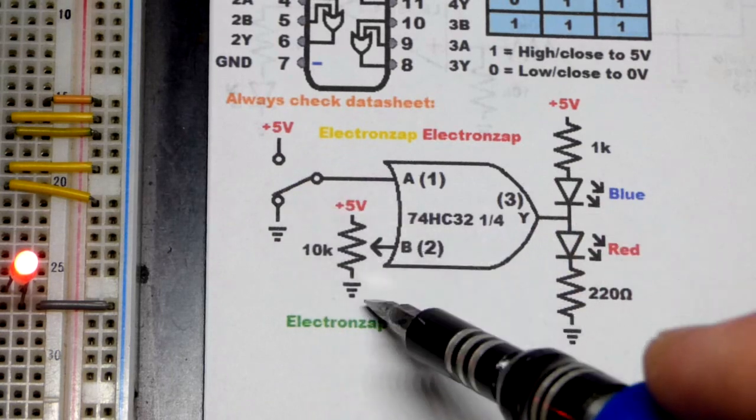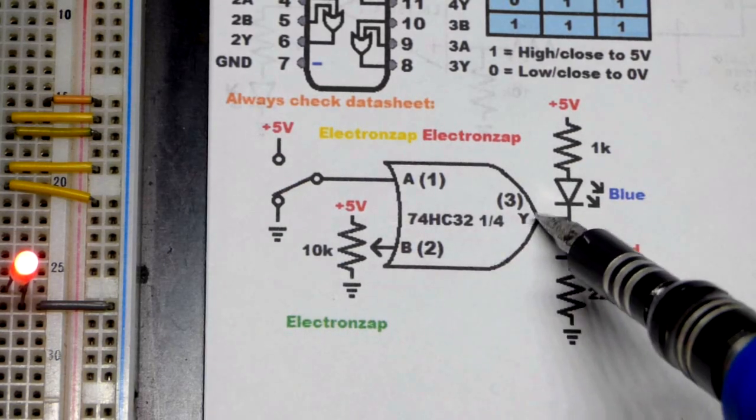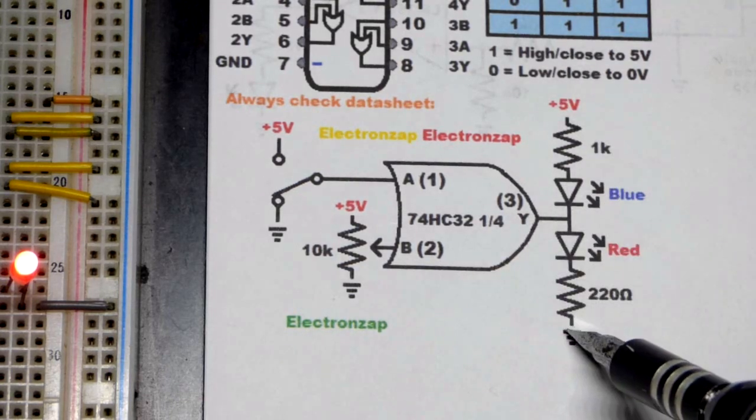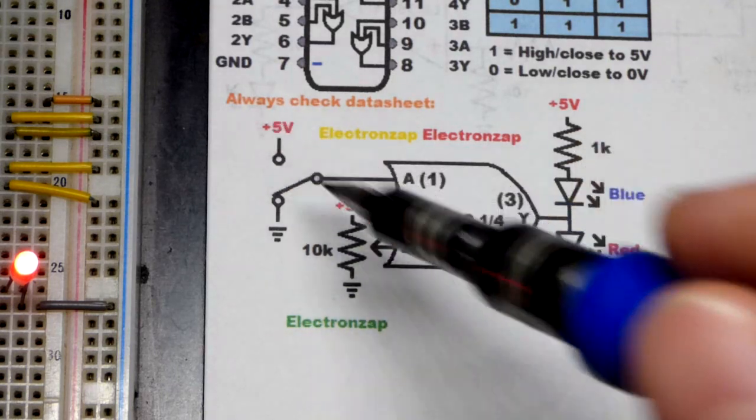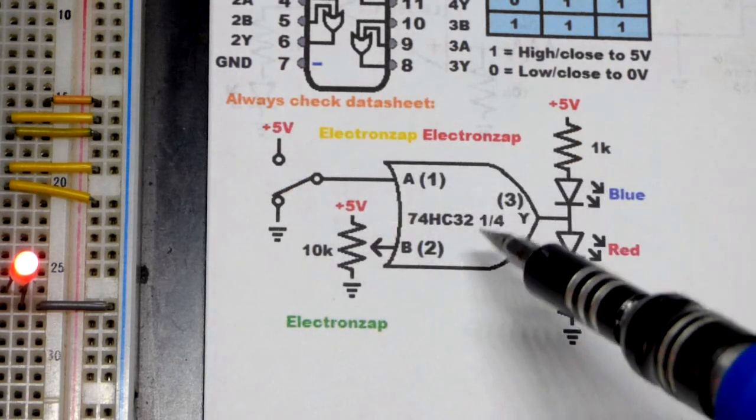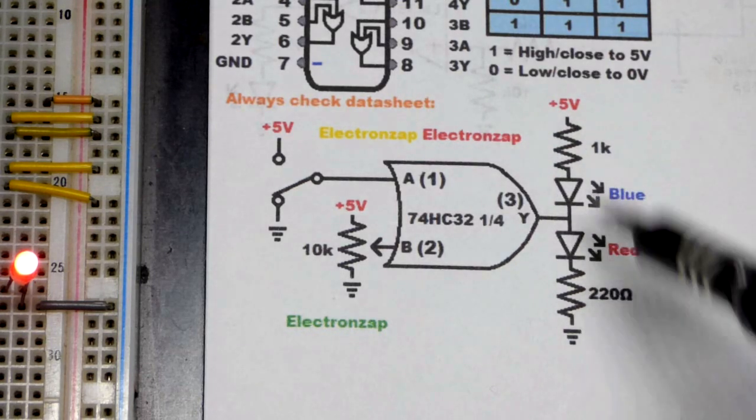But in any case with it low and the trim pot down lower, then we had a low output. It was connected to ground, which it does pretty good. So the blue LED lit up. And then if we moved one or the other or both positive enough, then we had a high output. So that was five volts coming out. The red LED lit up.